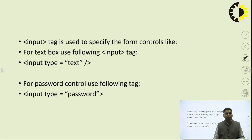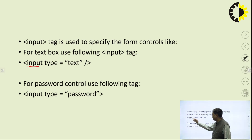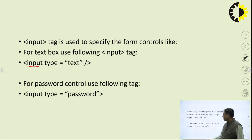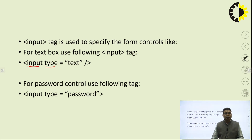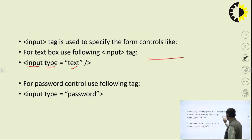Now, to create any text box or form element, the important part is writing the input tag. There is an attribute of this input tag called type. In the type attribute, you write the element name you want to display to the user. For example, type equal to text means a text box will be created.